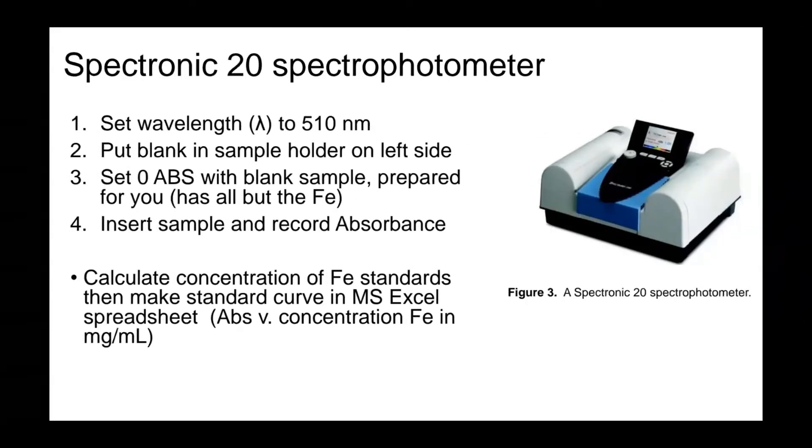When the standard iron solutions have been allowed to sit for the proper time, rinse one of the test tubes provided in the lab with distilled water. Before I show you, I want to introduce you to the spectrophotometer, which is the instrument we'll be using in the lab. In order to set up the spectrophotometer, you need to know your analytical wavelength. Then you put a blank in the sample holder on the left, set the absorbance to zero with the blank sample prepared for you. Then you insert the sample and record absorbance.